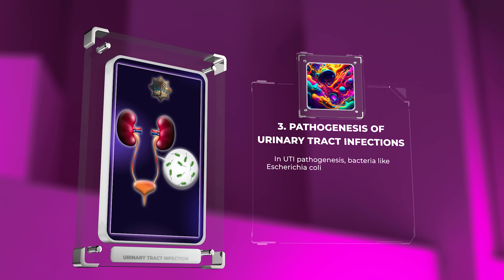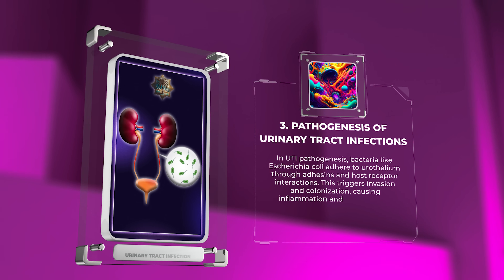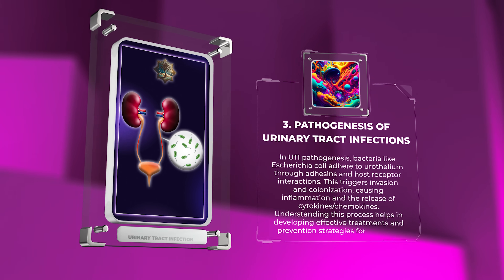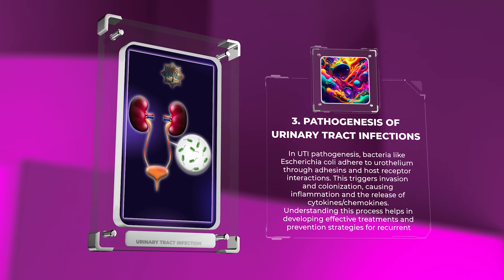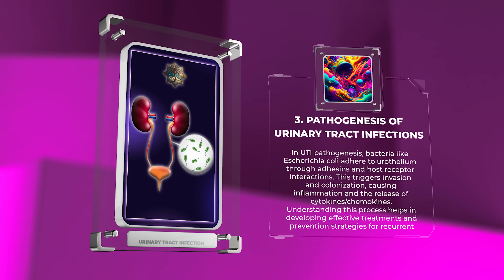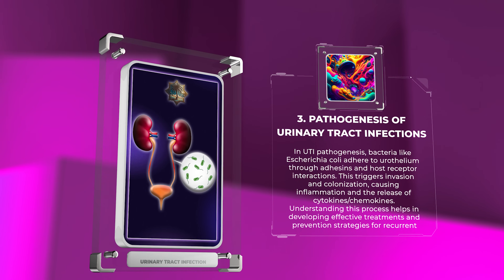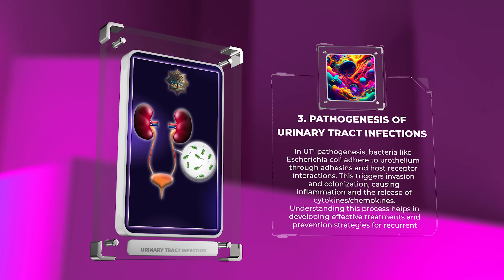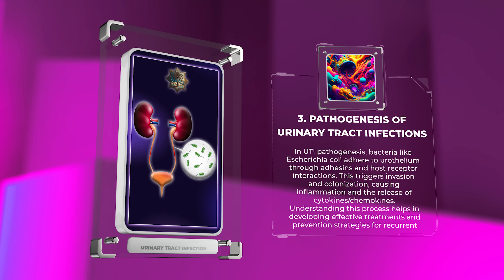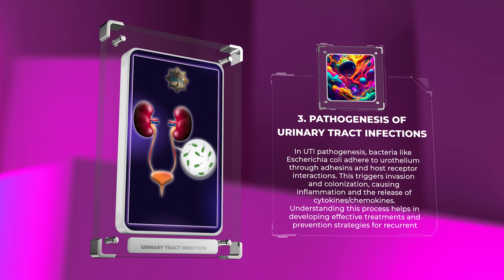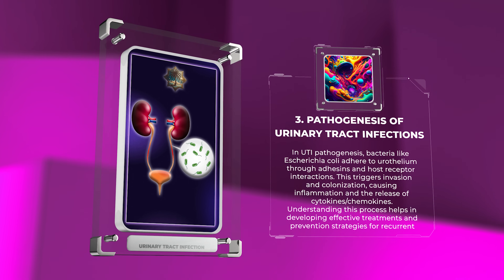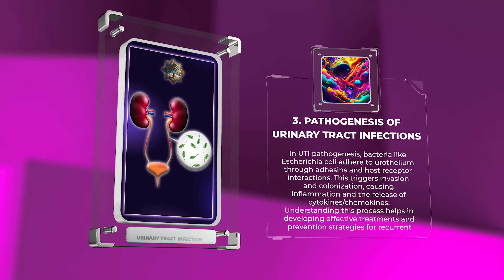In UTI pathogenesis, bacteria like Escherichia coli adhere to the urothelium through adhesins and host receptor interactions. This triggers invasion and colonization, causing inflammation and the release of cytokines and chemokines. Understanding this process helps in developing effective treatments and prevention strategies for recurrent UTIs.